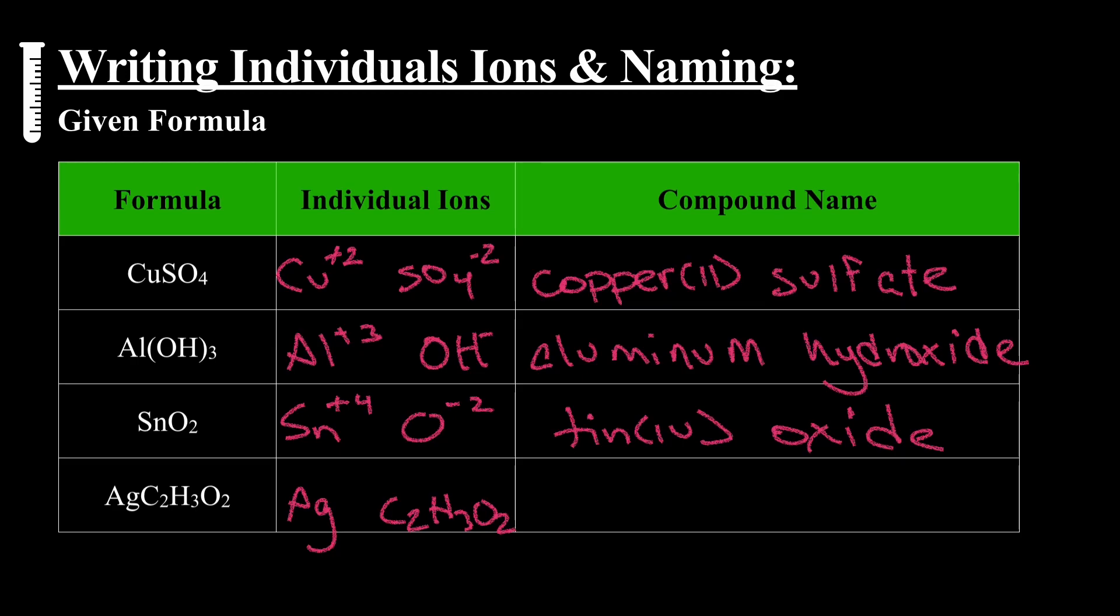Silver is a known charge, plus one. The acetate polyatomic C2H3O2, known charge minus one, so we name it silver acetate. Again, no Roman numerals on silver, because it's a known charge.